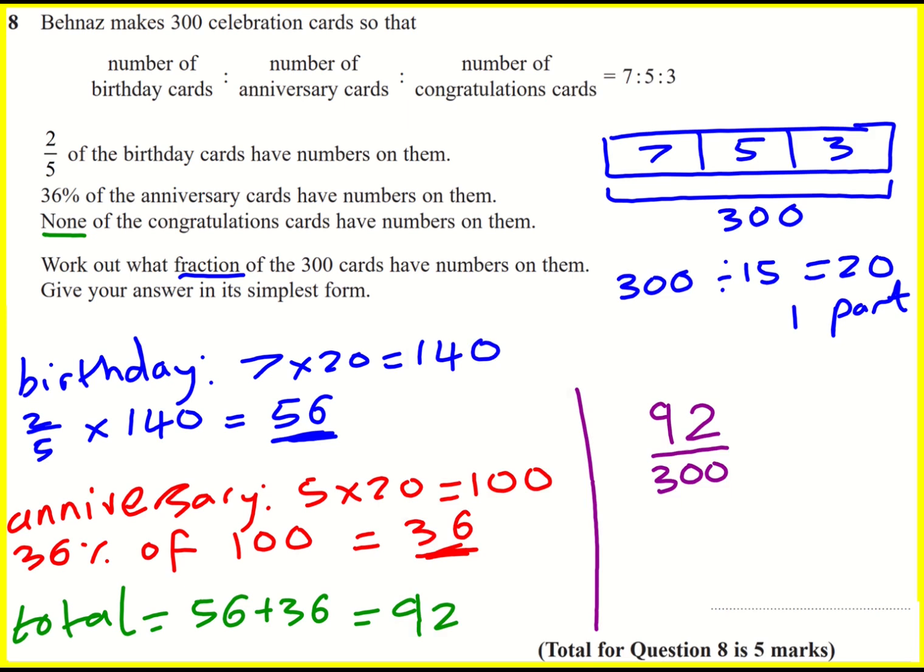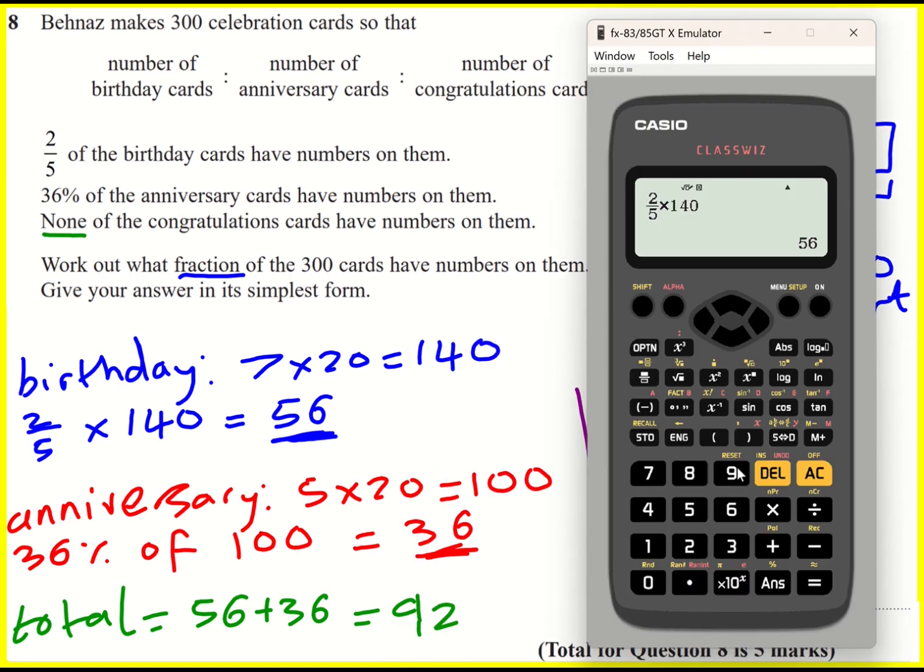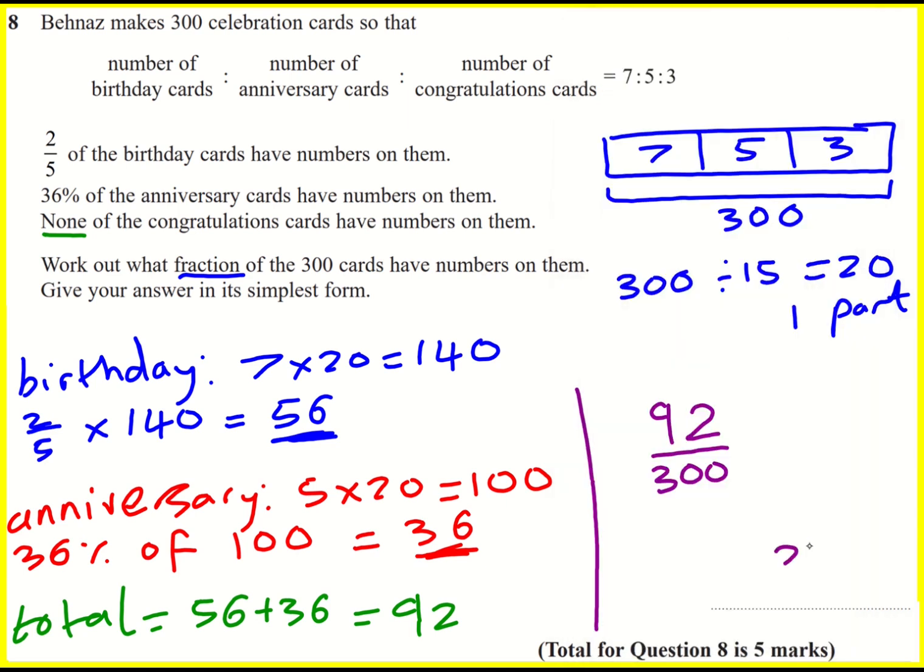And you can either cancel it down by hand, or you can just put it in your calculator. It will sort it out for you. Simplest form gives 23 over 75. You won't need to show working for that. But if you want to, of course, you could divide by two, because it's even, and then divide by two again. And there's no common factors then between 23 and 75, other than one. Well done.